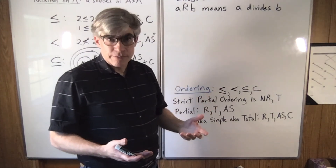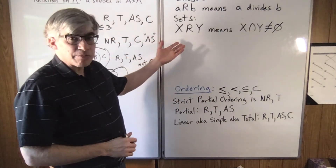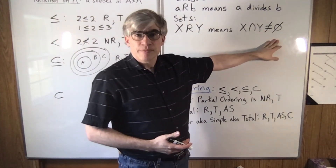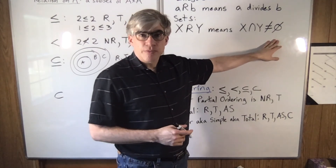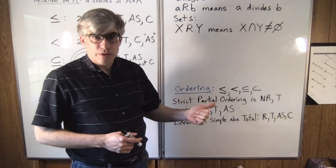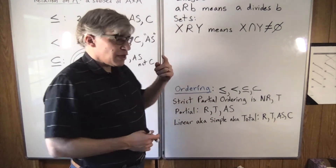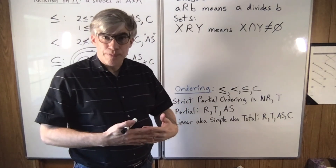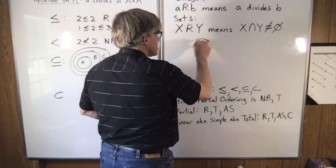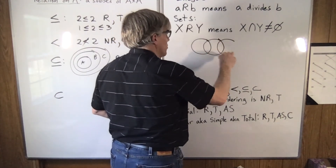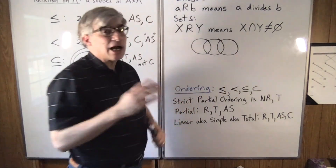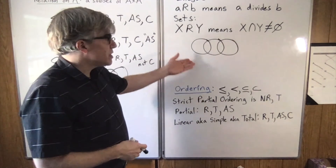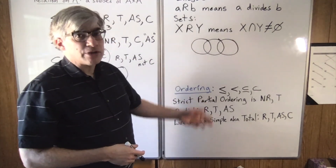One last example — a weird one. Suppose on sets, x is related to y means they overlap, i.e., they have a non-zero intersection. Any set is related to itself, so it's reflexive. If x overlaps with y then y overlaps with x, so it's symmetric. But if x overlaps with y and y overlaps with z, that does not mean x overlaps with z. So this is an example of a relation that is reflexive and symmetric but not transitive.